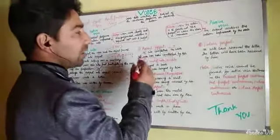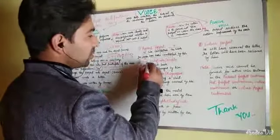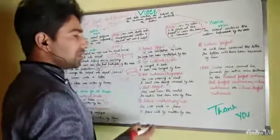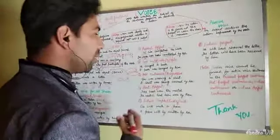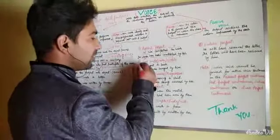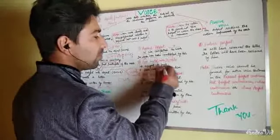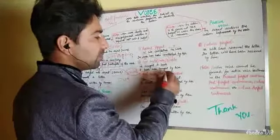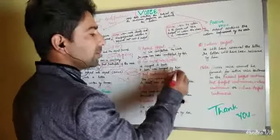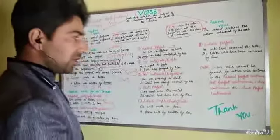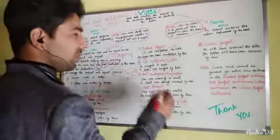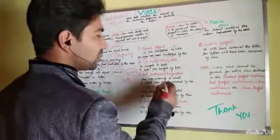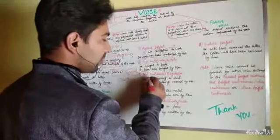We skipped present perfect continuous — I'll address that later. Now past indefinite or simple past: the structure is subject + second form of verb + object. In passive it changes to object + helping verb + third form of verb + preposition + subject. The subject pronoun changes accordingly — for example, 'he' becomes 'him.' So the active 'He wrote a letter' becomes 'A letter was written by him.'